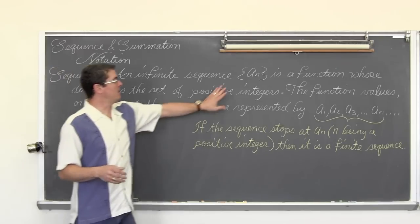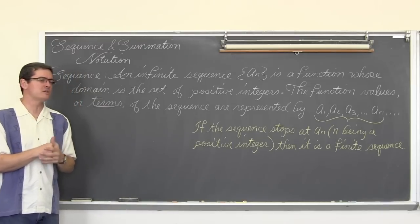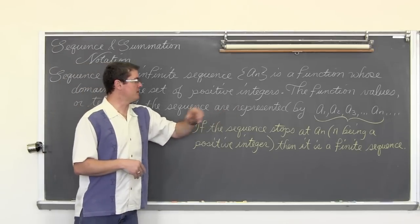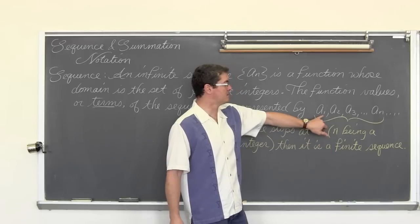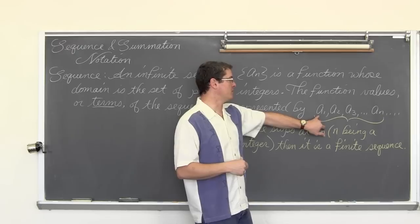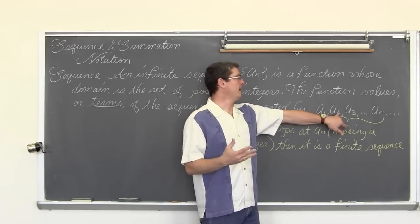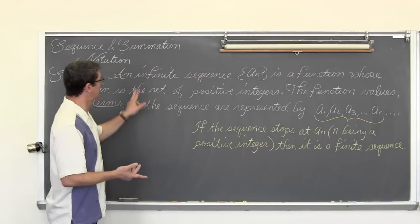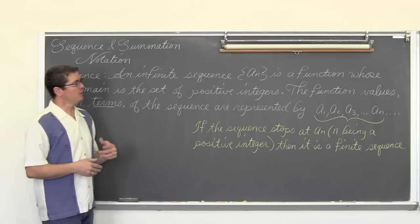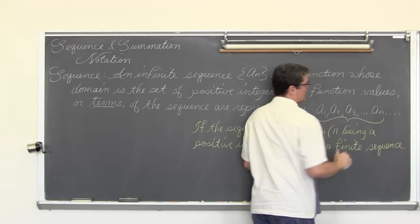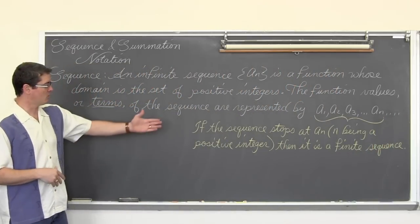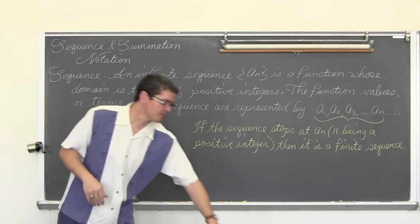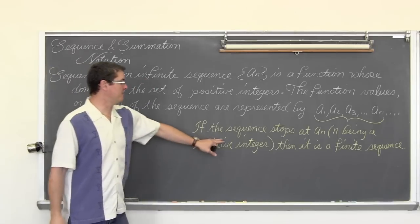The function values, which are going to be expressed with this a sub n notation, are kind of like f of x, only it is notation for a sequence. The function values or terms of the sequence are represented by a sub 1, a sub 2, a sub 3. You plug n equals 1 into an expression and get your a sub 1 value. Then plug in n equals 2 to get a sub 2, and so on, until you get to a sub n, with dot dot dot at the end, because we are defining an infinite sequence. If there is an ending point, you are looking at a finite sequence.